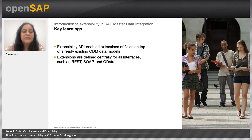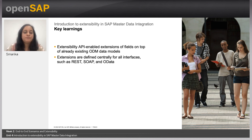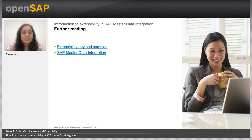The key learnings from this unit: the extensibility API enables extensions of fields on top of already existing ODM data models, and extensions are defined centrally for all interfaces such as REST, SOAP, and OData with the new extensibility API. For further readings, the first link defines the extensions payload in different scenarios, and the second covers SAP Master Data Integration. Thanks for listening and see you in the next unit.